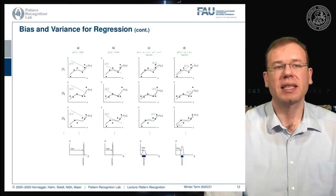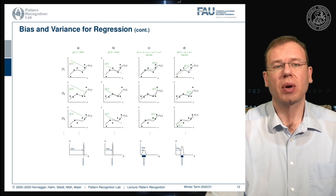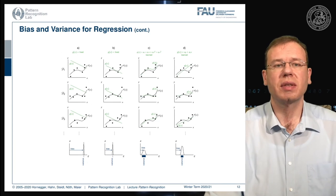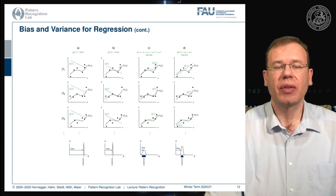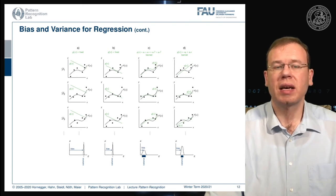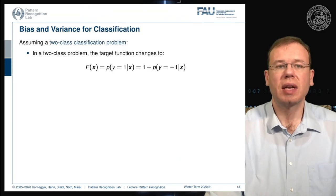Let's look at some bias and variance examples for regression. In the first column, models generally have high bias. In the second column, models have slightly lower bias but still very limited variance. In the third column, a more complex model has much higher variance, which can be used to reduce bias. In the last column, the model has lower variance but this comes at the cost of a certain bias.